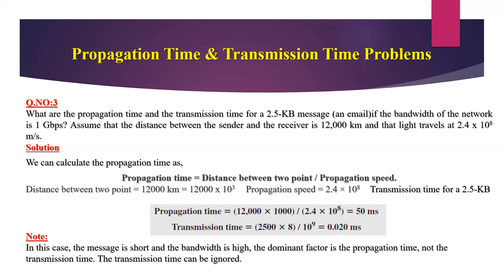In this case, the message is very short and the bandwidth is high — 1 Gbps — while the message is only 2.5 KB. The dominant factor is propagation time at 50 milliseconds, whereas transmission time is only 0.020 milliseconds. So the dominant factor is propagation time, not transmission time, and the transmission time can be ignored.